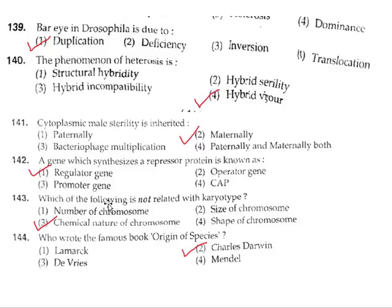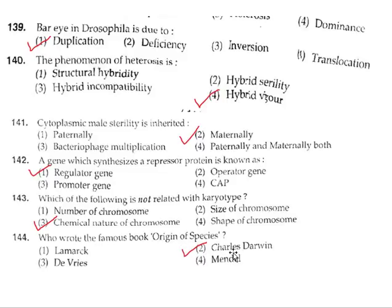Question 143: Which of the following is not related to karyotype? Number of chromosomes, size of chromosomes, and shape of chromosomes are all related; chemical nature of chromosomes is not. Question 144: Who wrote the famous book 'Origin of Species'? It was written by Charles Darwin. Correct answer is option 2.